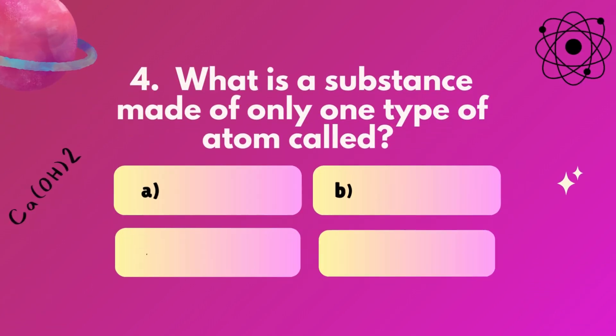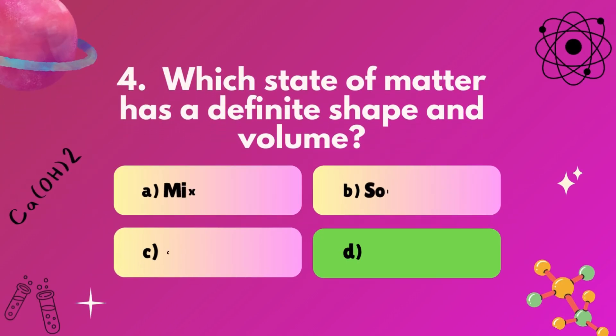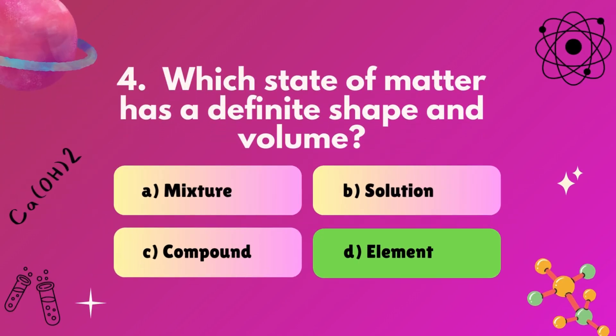Question 4: What is a substance made of only one type of atom called? A, mixture. B, solution. C, compound. D, element? Correct answer: D, element.